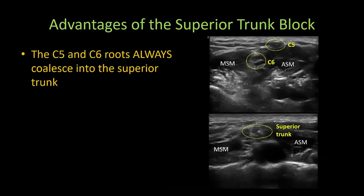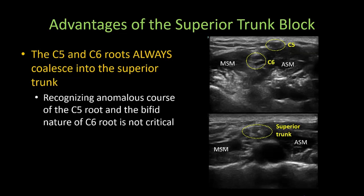The superior trunk block addresses many of these pitfalls. First, the C5 and C6 roots always coalesce into the superior trunk, regardless of any anatomical anomaly in the course of the roots. In this individual with a C5 root traveling on top of and through the anterior scalene muscle, the superior trunk is easily visible in its usual location more distally.